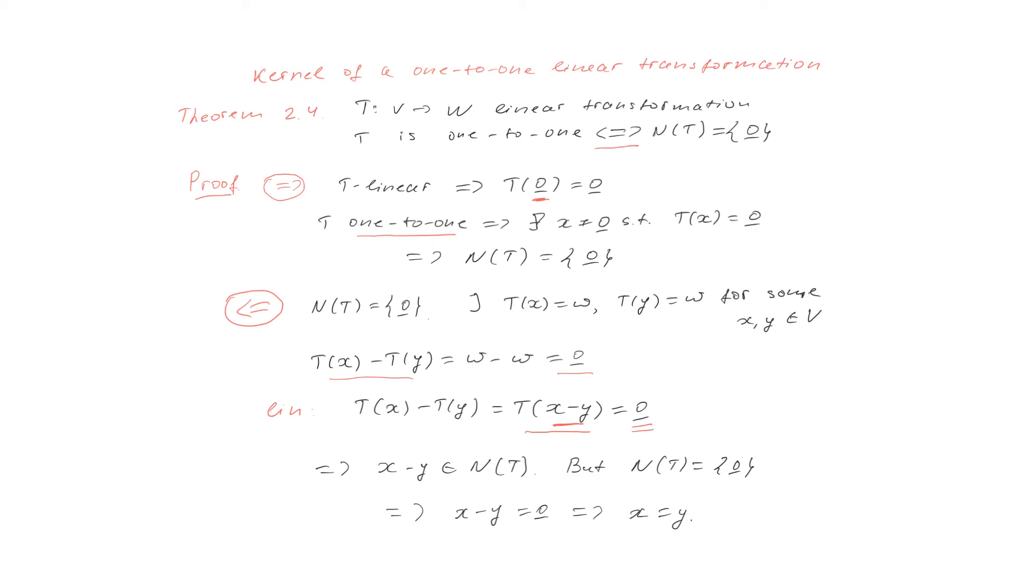So we started with the assumption that there are two vectors in V which transform into the same vector w. And we arrive to the conclusion that actually these two vectors were the same. And that means that the transform is one-to-one. And that completes the proof.